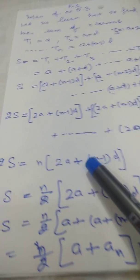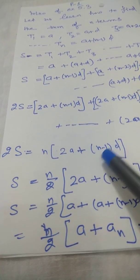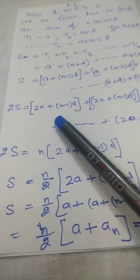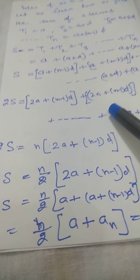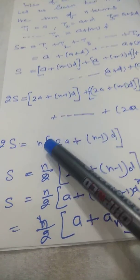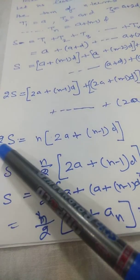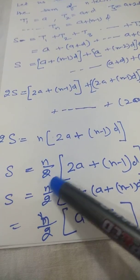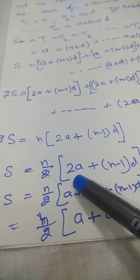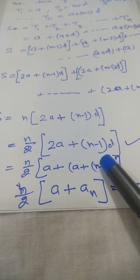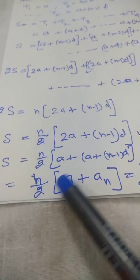So 2S = n × [2a + (n-1)d]. Dividing both sides by 2, we get S = n/2 × [2a + (n-1)d]. This is the first formula for the sum of n terms of an AP.